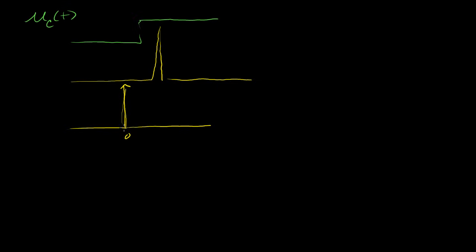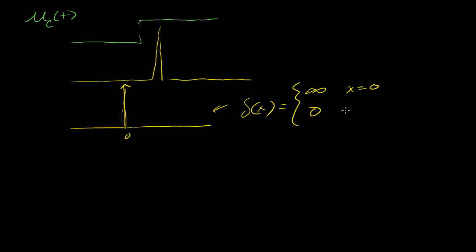What good is this function? How can you even manipulate it? I'm going to make one more definition. We represent this function by delta — that's what we do. It's called the Dirac delta function. Informally, it pops up to infinity when x is equal to 0, and it's 0 everywhere else when x is not equal to 0.